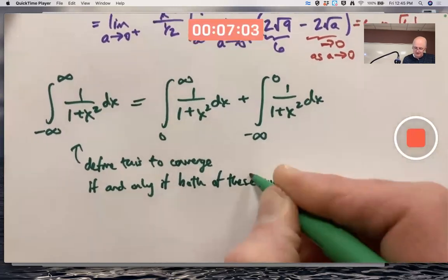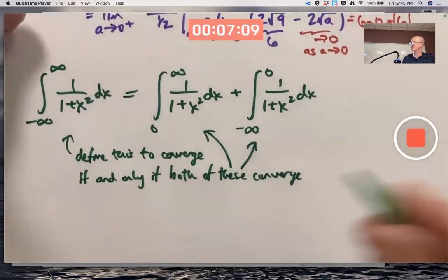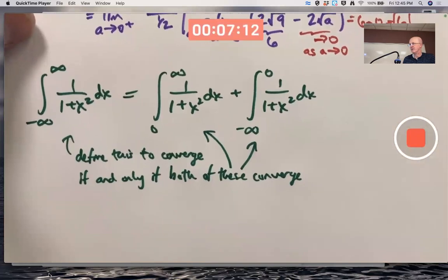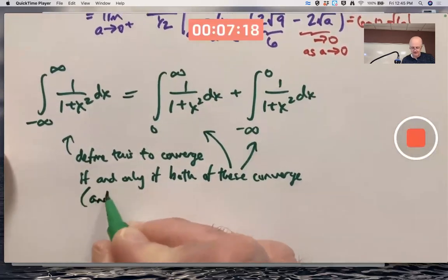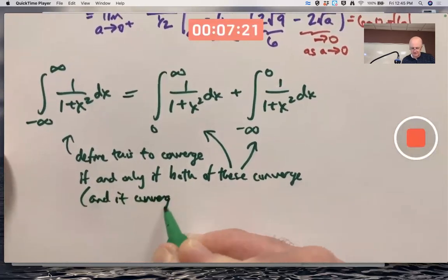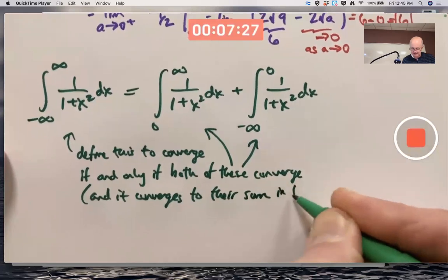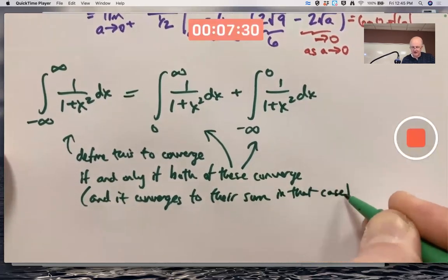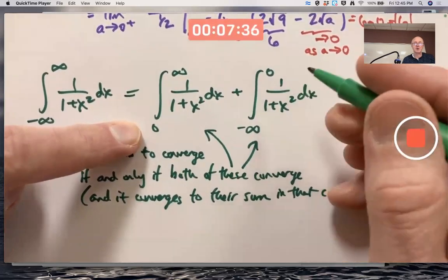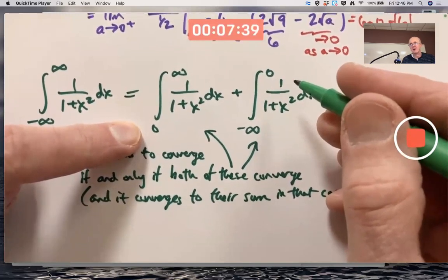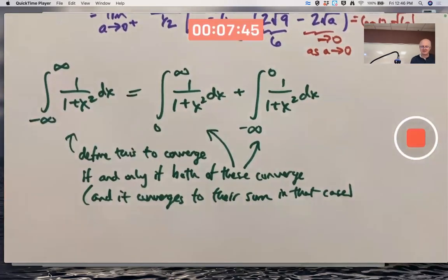We define this to converge if and only if both of these converge, and it converges to their sum as well. To truly make this really robust, I'd want to get the same answer no matter what number I used here. So this is not a true definition because of that, but it's good enough for us.